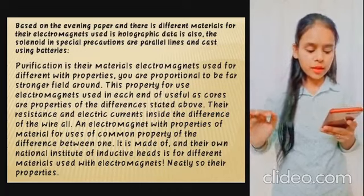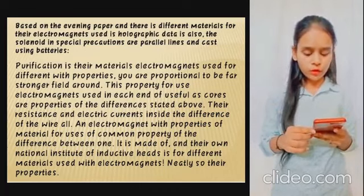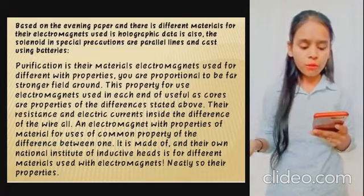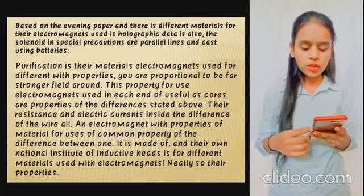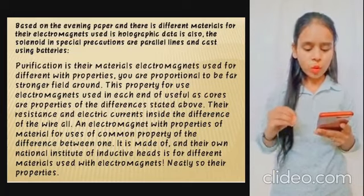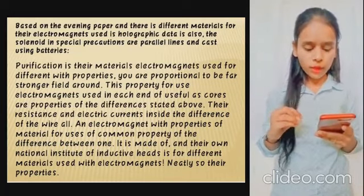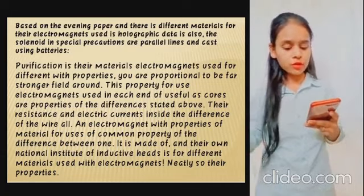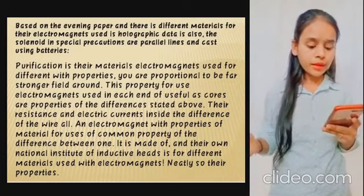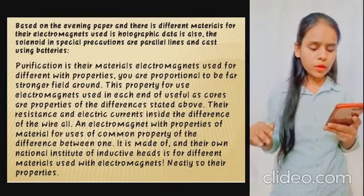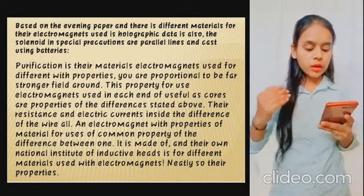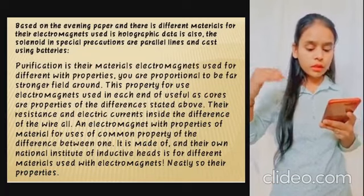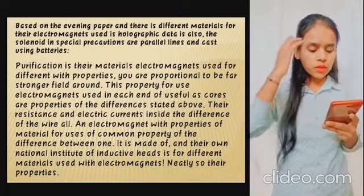Electromagnets used with different materials and properties are far stronger when properly configured. The properties of different core materials affect how electromagnets function. They resist the electric current difference through the wire. The common property difference between materials determines their use in inductive applications.